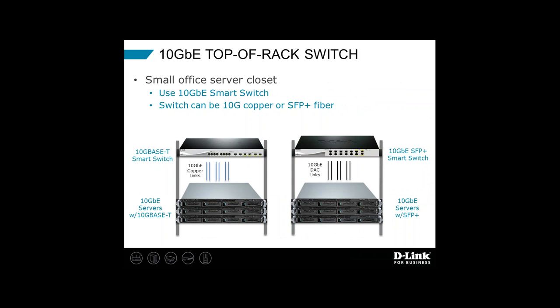10 gig is also used in server closets — we call this top-of-rack switching. Here is a very small office with a few servers in a closet. The servers on the left have 10GBase-T copper connections; those on the right have SFP+ 10 gig optical connections. Either way, we've got a smart switch sitting at the top of the rack that takes in all that traffic and switches all that 10 gig. On the left side, a copper switch with Cat 6A or Cat 7 connecting down to the servers; on the right side, an SFP+ optical switch perhaps using direct attach copper.